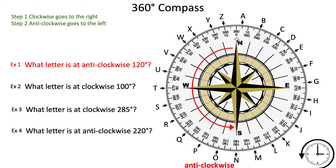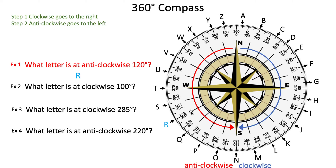Let's read the first example: what letter is at anti-clockwise 120 degrees? We're going anti-clockwise — going to the left — so we use the inner numbers. Start counting up: 0, 10, 20, 30, and so forth, until we get to 90, 100, 110, and 120. This means letter R is our answer.